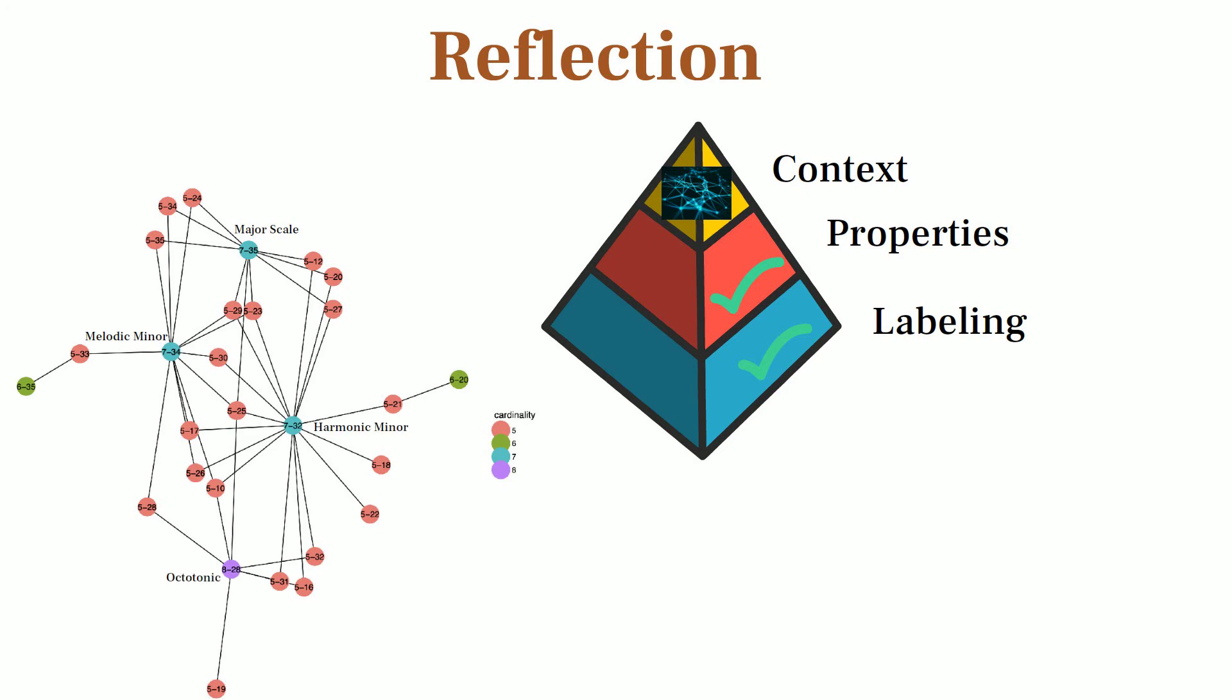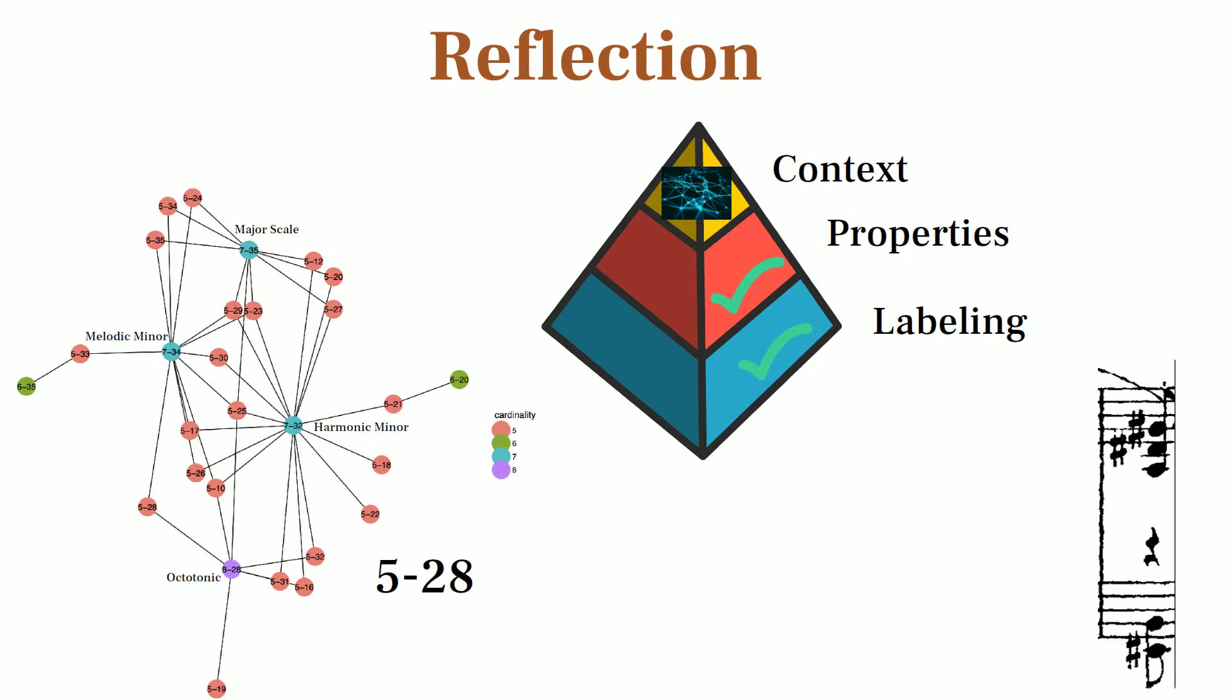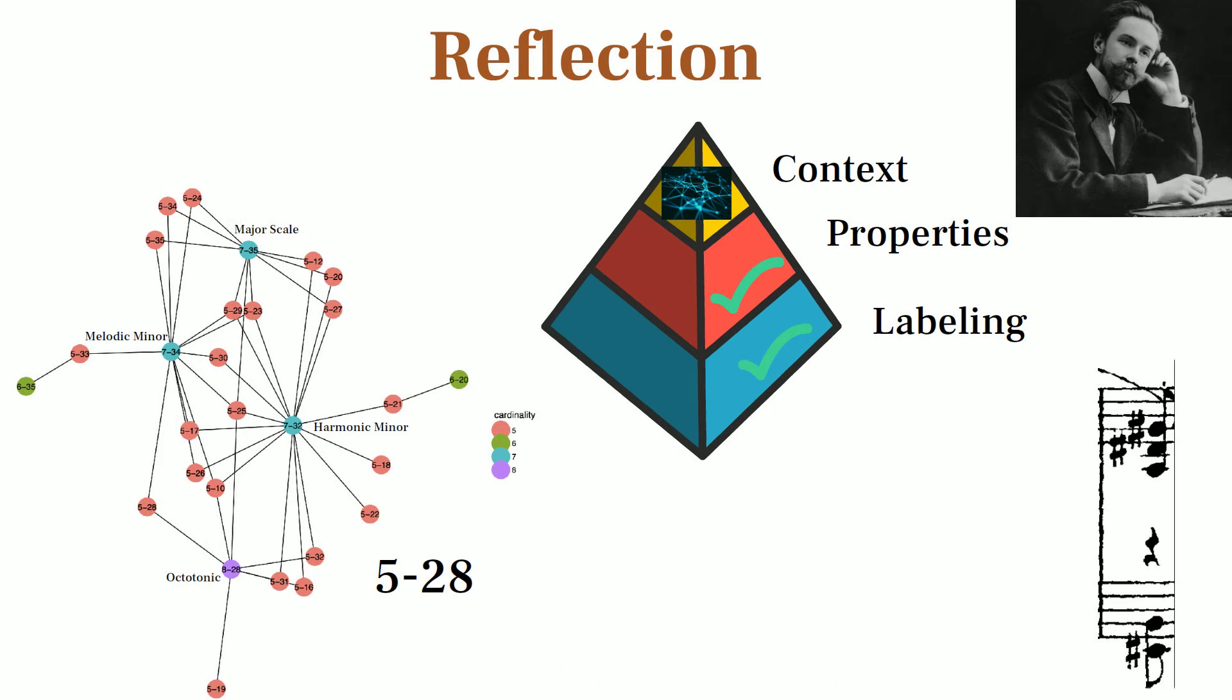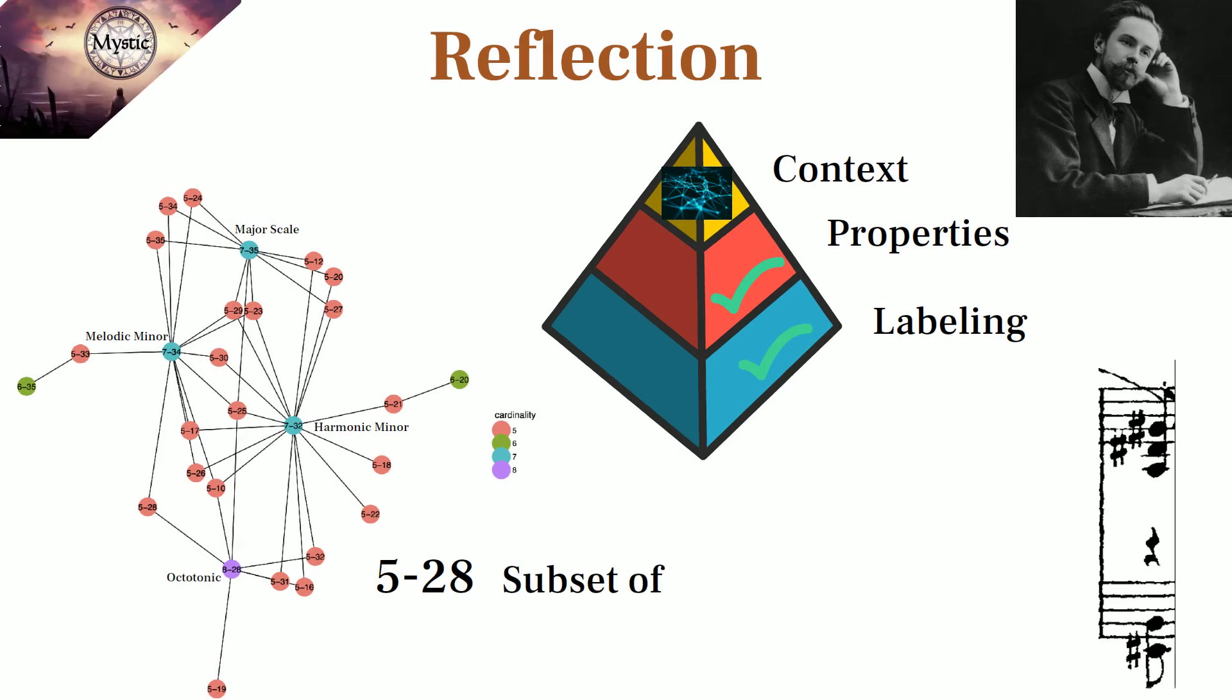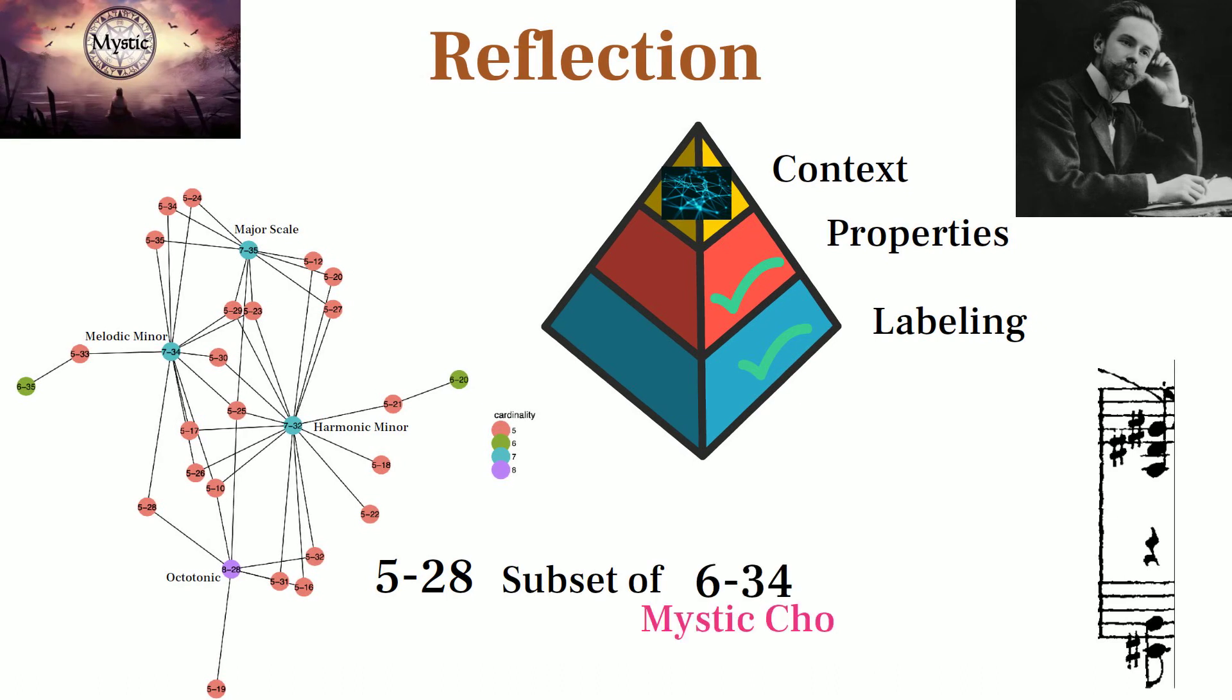For example, remember that cool Scriabin chord we looked up called 5-28? It's important to realize that it's a subset of Scriabin's famous mystic chord. Is the mystic chord the main large set used in Scriabin's music like the diatonic scale is for tonal music? Or is it more like a subset of something even larger?